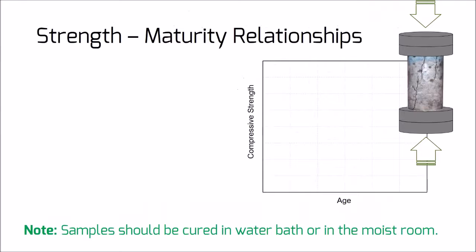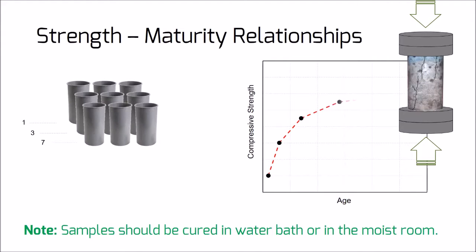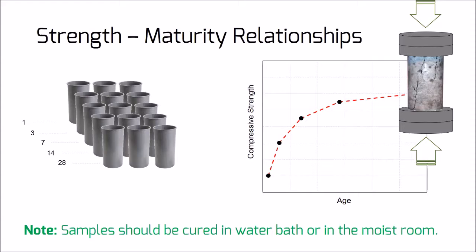In order to use the maturity method for predicting early age strength of concrete, we need to develop the strength-to-maturity relationship first. To do so, compressive strength of concrete should be correlated with the temperature history. The standard procedure is well described in ASTM C1074. According to this standard, 15 cylindrical samples should be prepared for compression testing. Specimens should be cured in water or moist room conditions and tested for compressive strength at different ages: 1, 3, 7, 14, and 28 days.